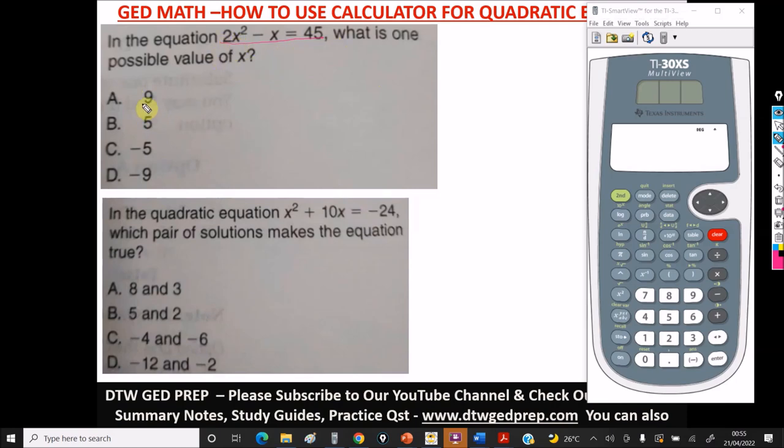To do this with your calculator, it's as easy as just using the values of your options, putting it as x in this equation. And when you put it in as x, it should equate to 45. For instance, if we're using 9, this would be 2(9²) - 9 equals what? 45. Let's check if this would equate to 45.